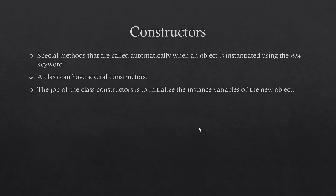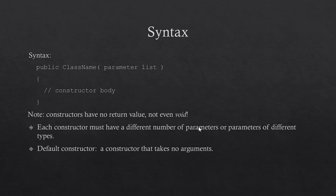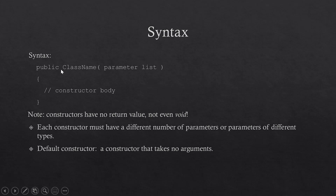In most cases I do not want to use the default constructor provided by Java. I'll need to create my own constructors to set default values or accept initial values from whoever is creating the object. To create a constructor, I set the access modifier to public so anyone can access it from outside the class. The constructor will have the same name as the class name including uppercase, then parentheses with an optional parameter list, and curly braces containing the constructor body which initializes the instance variables.